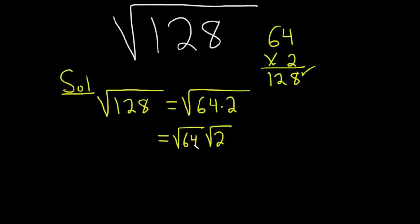And we know something about the square root of 64. It's equal to 8. This will be 8 square root of 2. And that would be the simplified version of the square root of 128.